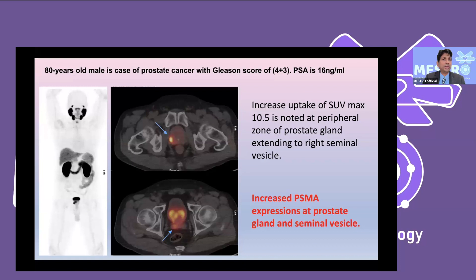As an example, an 80-year-old male with Gleason score 7 and PSA of 16 showed high PSMA expression in the right peripheral zone with SUV max of 10.5, and unfortunately also demonstrated high PSMA expression in the right seminal vesicle, indicating infiltration of the seminal vesicle.